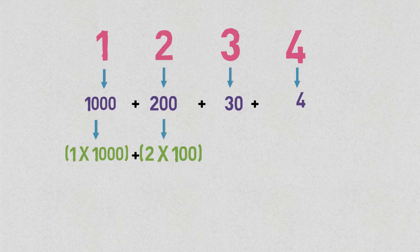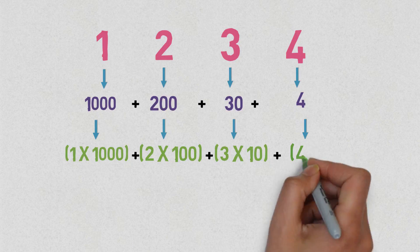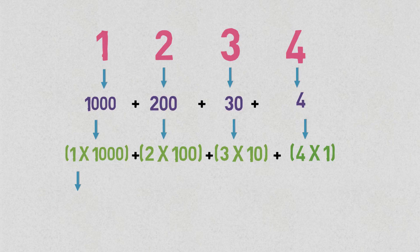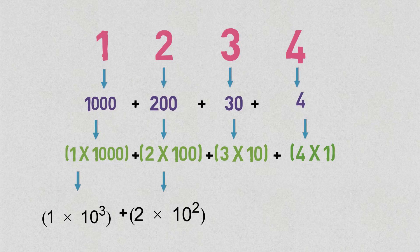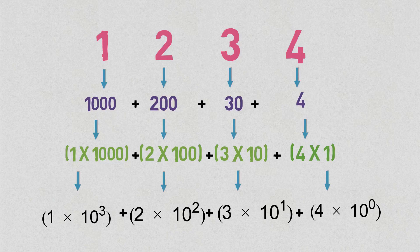The number 1234 can be written as 1×1000 + 2×100 + 3×10 + 4×1, or further as 1×10³ + 2×10² + 3×10¹ + 4×10⁰. So from the rightmost side you have 10⁰, 10¹, 10², 10³, and it goes on. In the decimal number system, we have ten numbers and the base is ten.